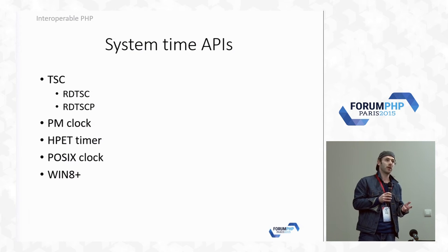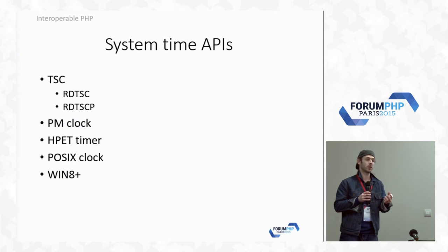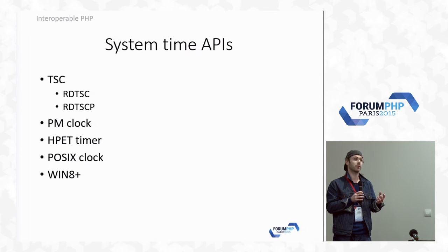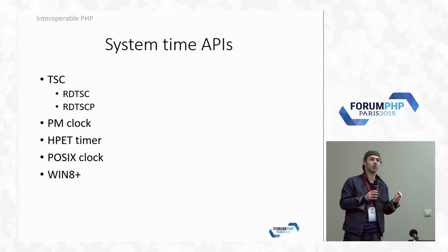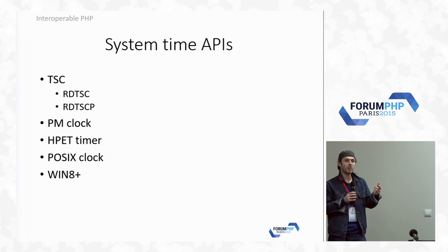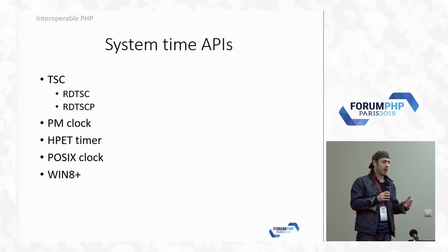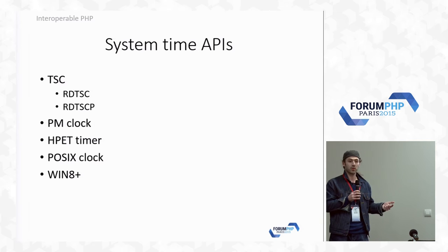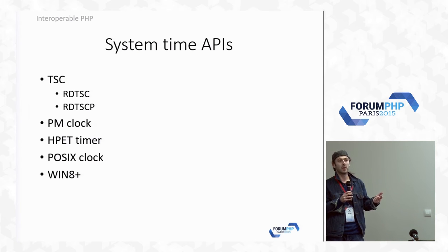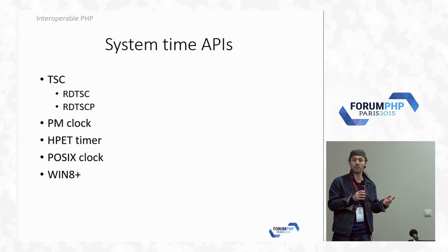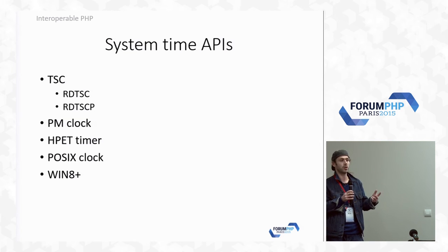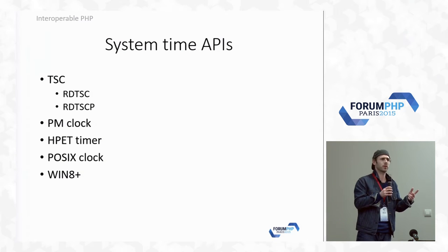It starts with the hardware. There is always a hardware time source. The TSC — Timestamp Counter — is a processor register which delivers events at some frequency. Another hardware source could be a power management device. Another could be a multimedia chip, like in gamers' computers. The operating system will choose the best one of these hardware sources.